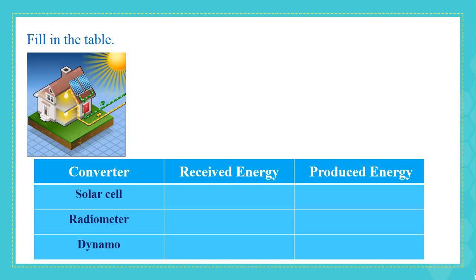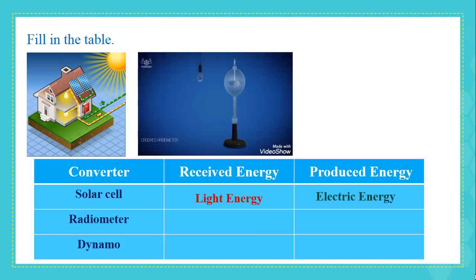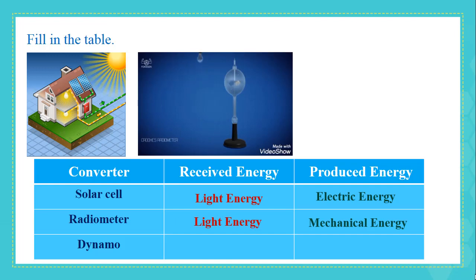The solar cell receives light energy from the sun and converts it to electric energy we use to power different electric appliances such as televisions and computers. The radiometer receives light energy and converts it to mechanical energy. The radiometer is used to measure the intensity of light — the more light is present, the more the radiometer rotates.